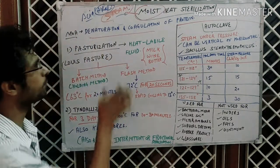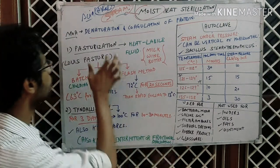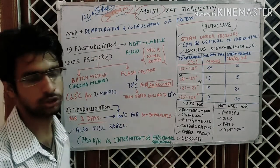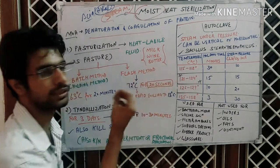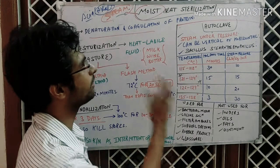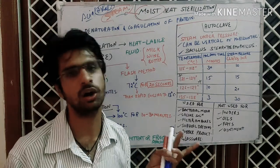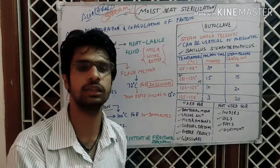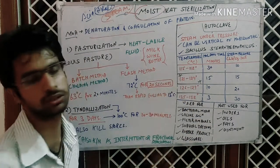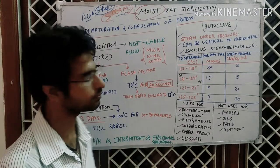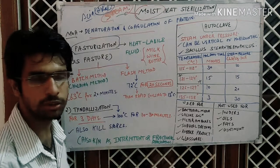So the mechanism of action is denaturation and coagulation of the protein. There are three main methods or techniques used in moist heat sterilization: pasteurization, tyndallization, and the autoclave. You can also take a pressure cooker as the simplest example of moist heat sterilization.